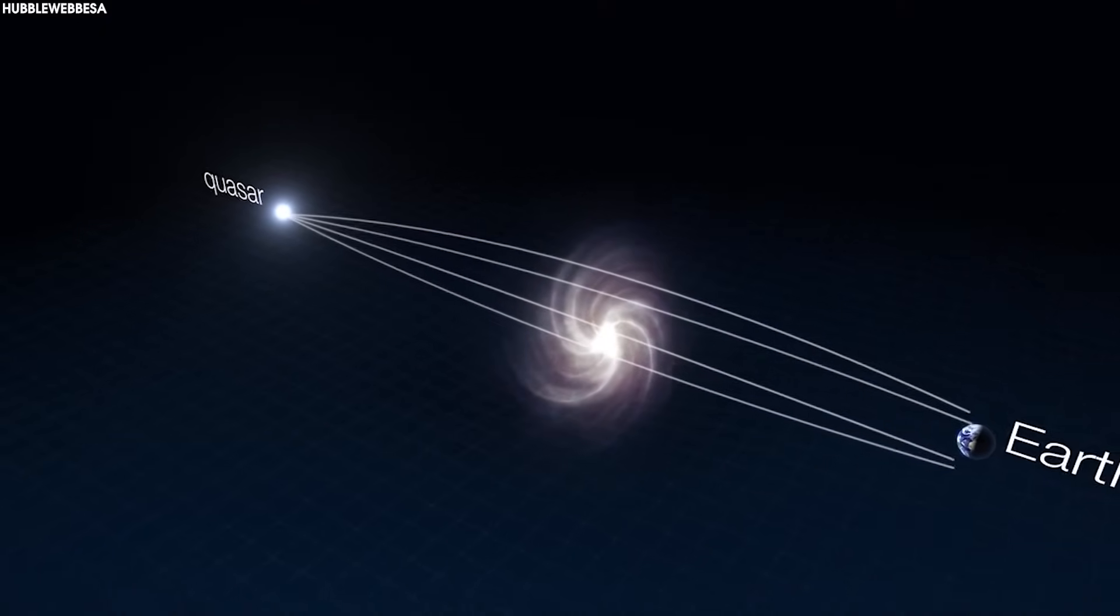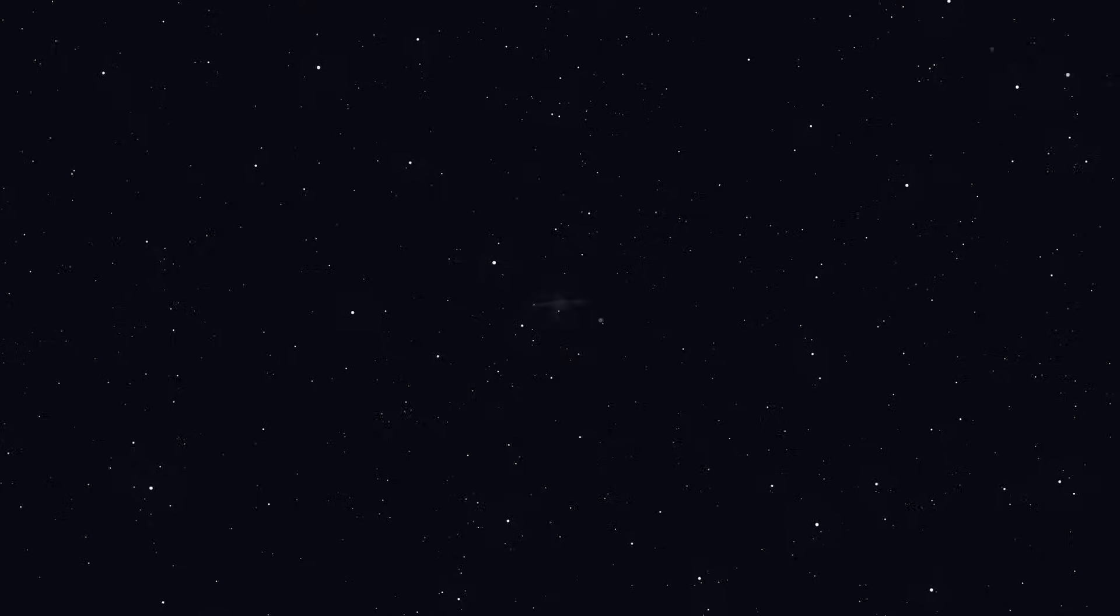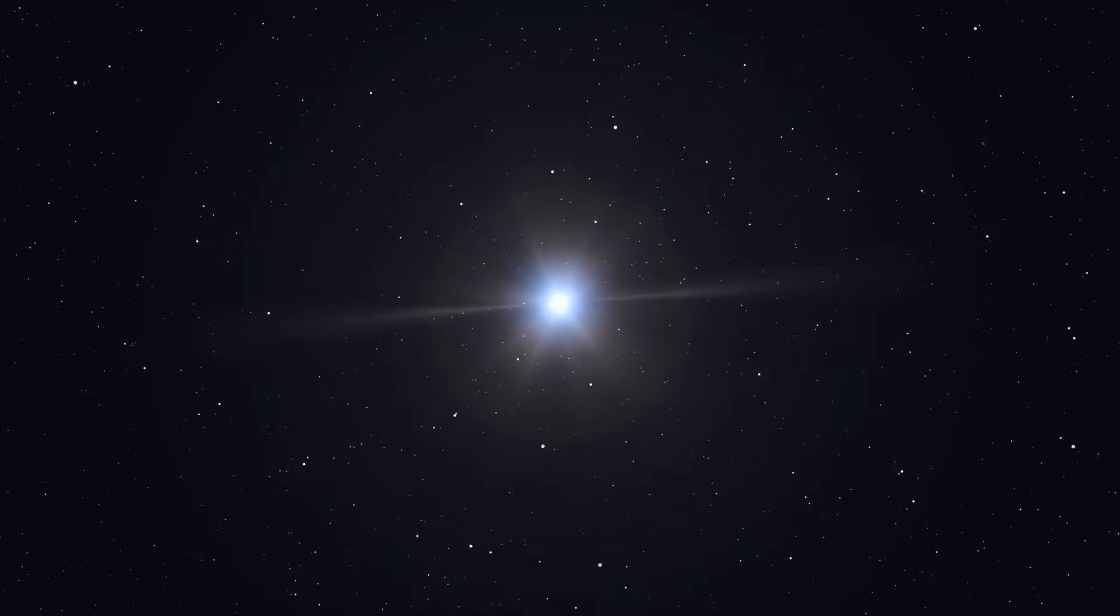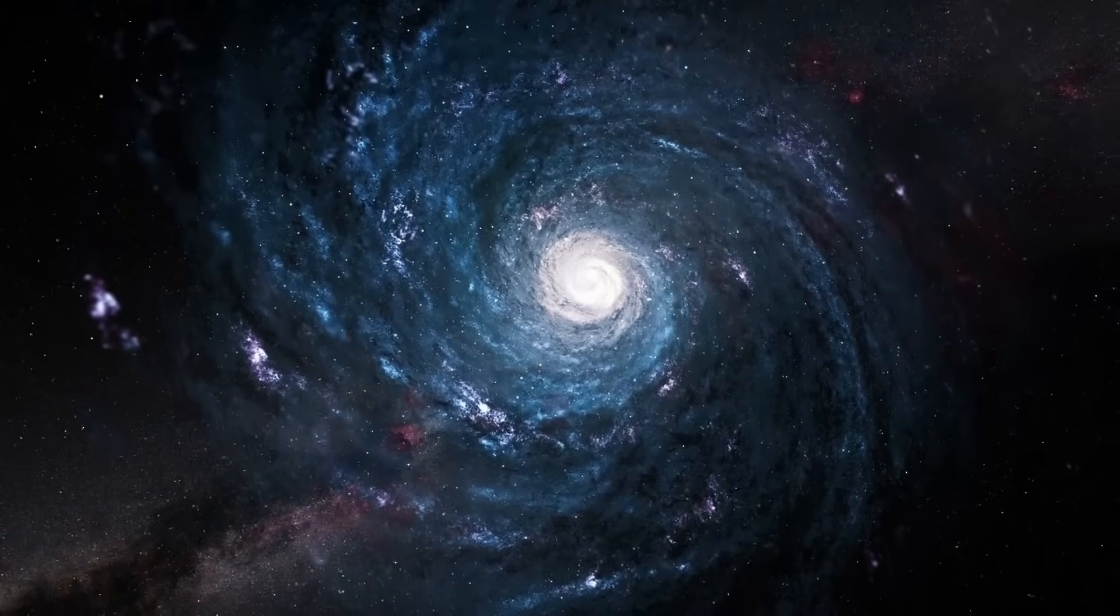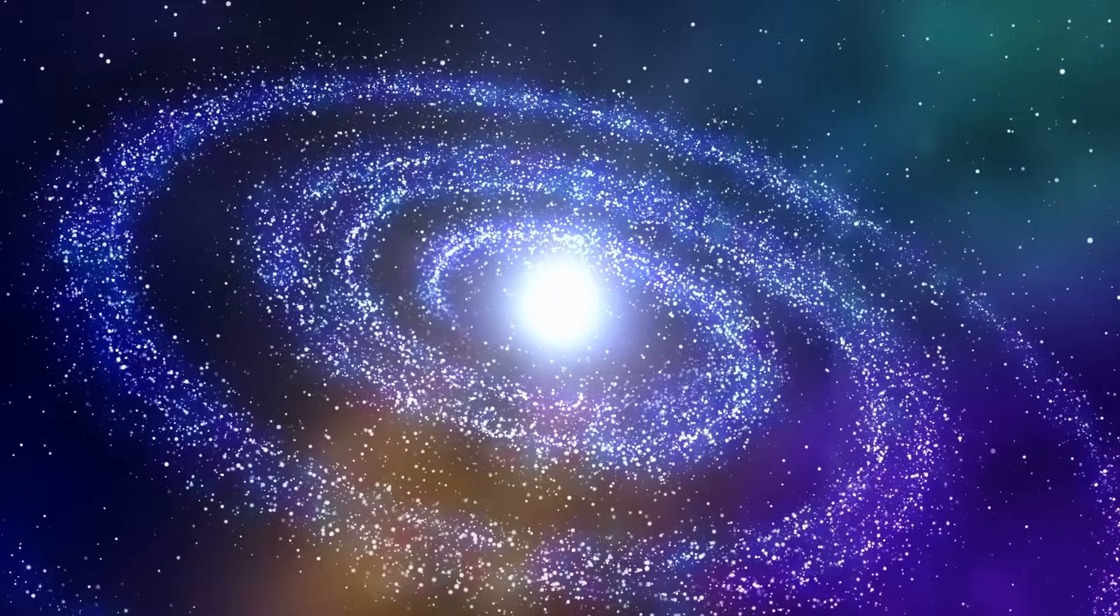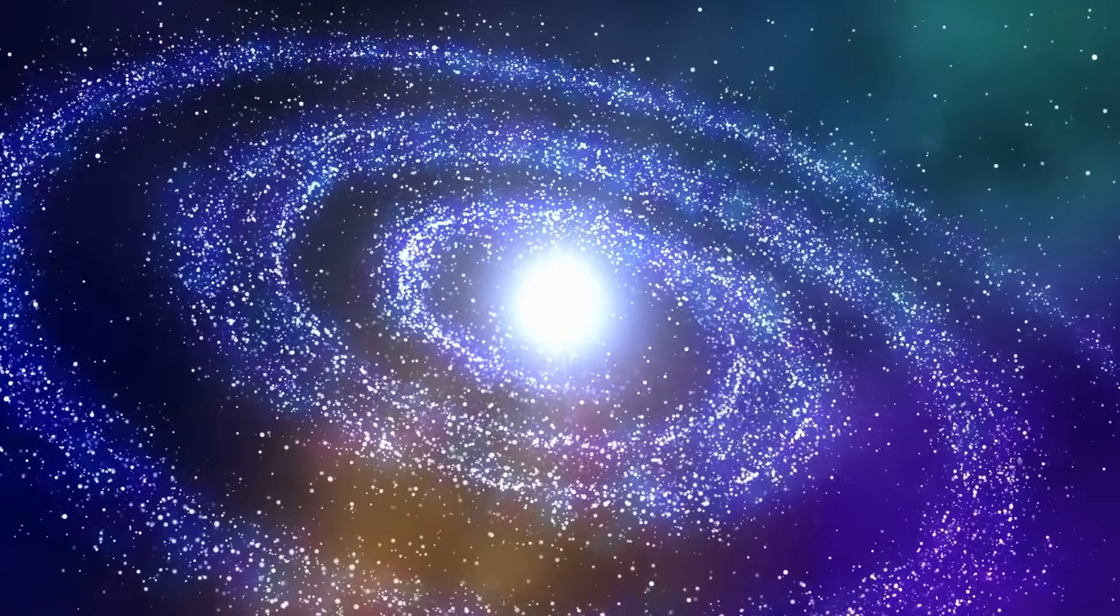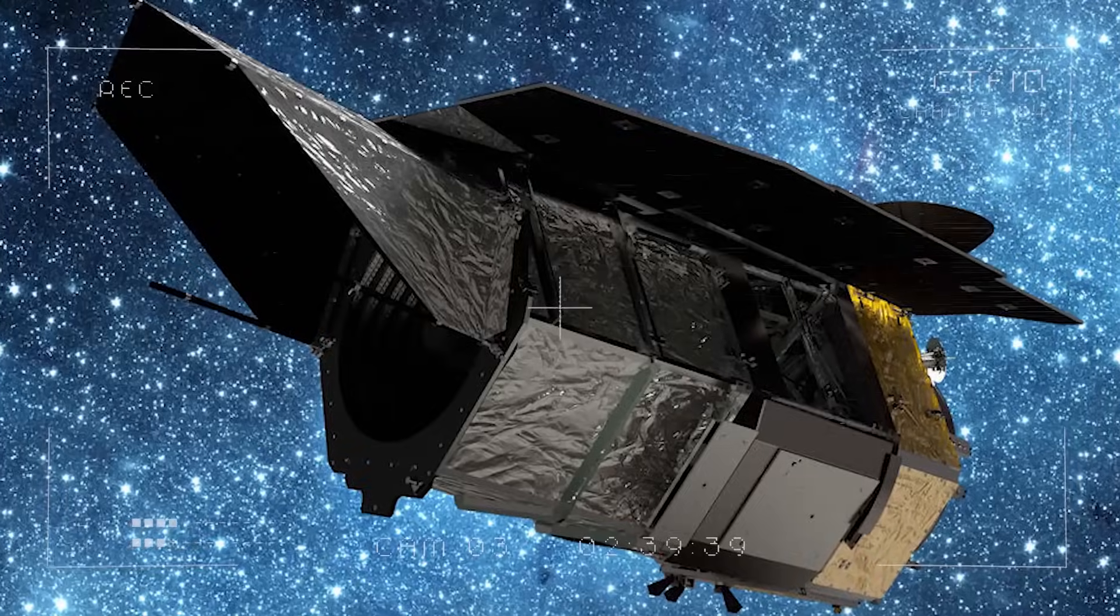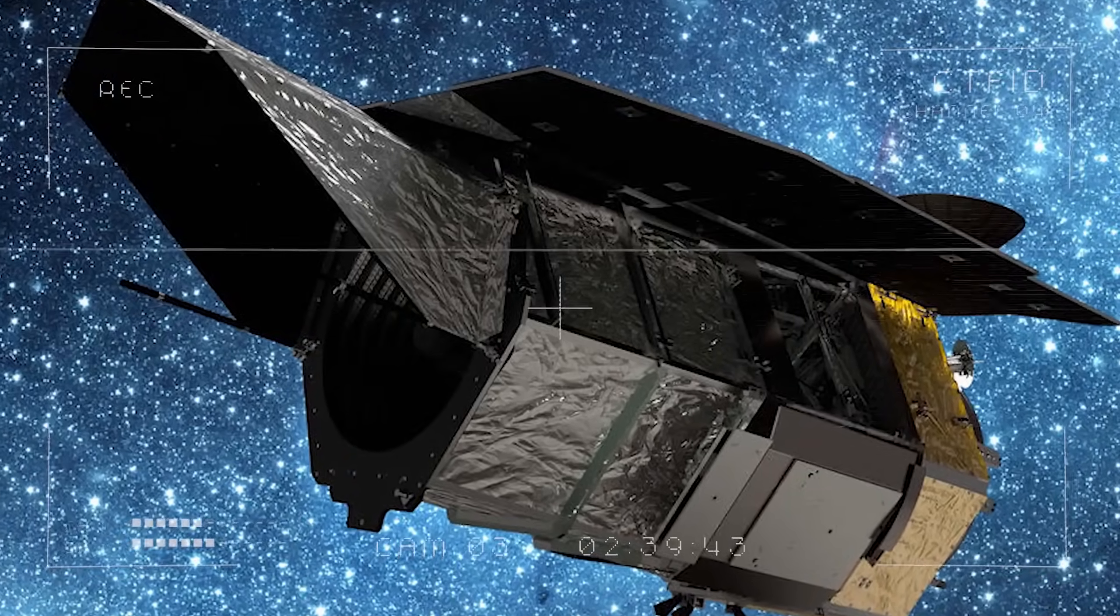Roman will use this to hunt microlensing events happening as a planet moves in front of a star in the background, lensing it and causing a temporary increase in brightness. The telescope will conduct the galactic bulge time-domain survey by taking an image of this central region every 15 minutes for two months. This observing campaign will be repeated six times over the five-year primary mission of Roman, creating combined observations amounting to over a year.